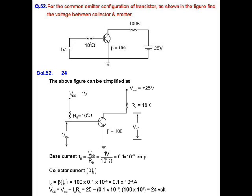In this question, a common emitter configuration transistor is given and we have been asked to calculate the voltage between collector and emitter, that is VCE. To simplify the circuit, we can divide it into two parts: input and output. In the input loop, we can find the base current Ib = Vbb / Rb, where Vbb is the input voltage on the base terminal given as 1 volt and Rb is given as 10⁷ ohms. So Ib = 0.1 × 10⁻⁶ amperes.